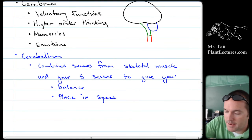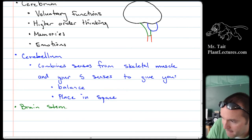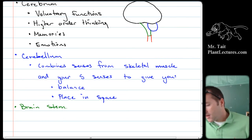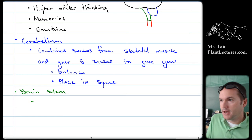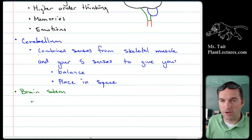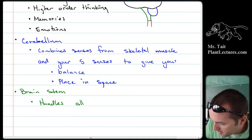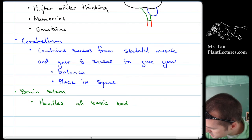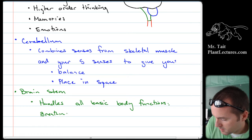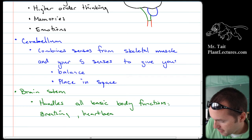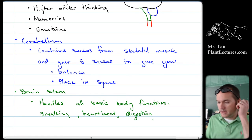Then we're going to look at the brain stem — that's the green part. The brain stem gives you all your most basic functions: your breathing, your heartbeat, anything you don't consider at all on a daily basis is handled in your brain stem. It handles all basic body functions — things like breathing, heartbeat, and digestion.